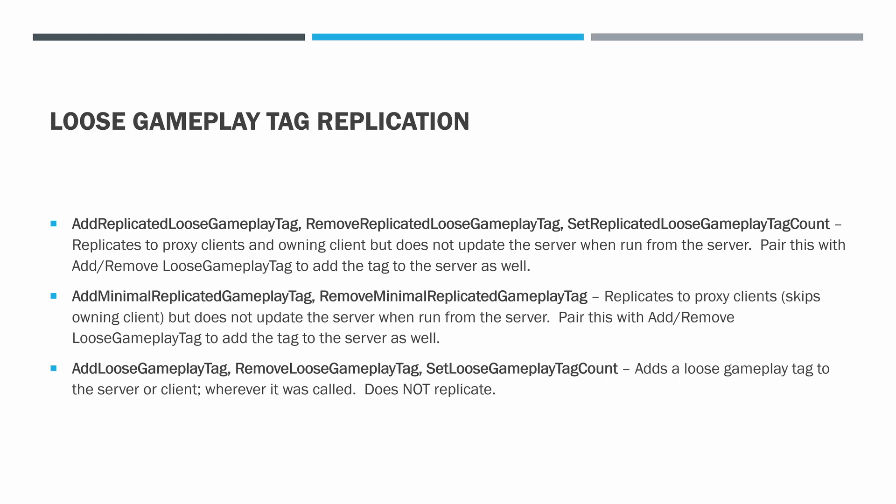There's also an Add Minimal Replicated Gameplay Tag version. This one does not have a Set Count — it can only do an Add or Remove. It replicates to proxy clients and skips the owning client, which works well for a mob. It also does not update the server when run from the server, so you have to pair it with Add/Remove Loose Gameplay Tag to add to the server as well. The final set — Add Loose Gameplay Tag, Remove Loose Gameplay Tag, Set Loose Gameplay Tag Count — does no replication at all. Call it on the client, it sets on the client; call it on the server, it sets on the server.